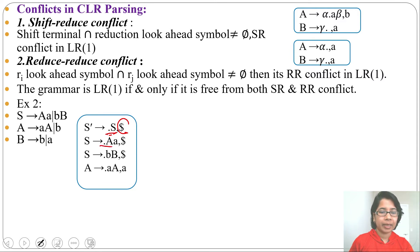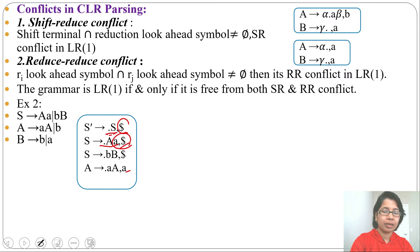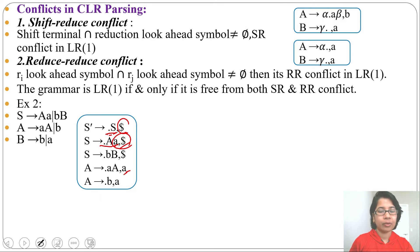Since there is a dot before 'a', we add the A productions: A → ·aA with lookahead FIRST(a·dollar) = a, and A → ·b with lookahead a. We assign the state name i0. From i0 by S it goes to another state i2 containing S' → S· with lookahead dollar.